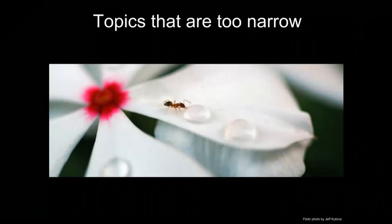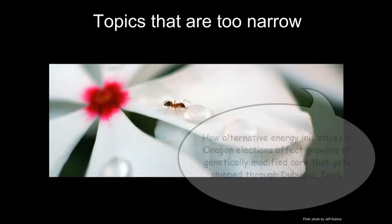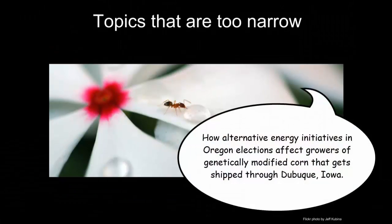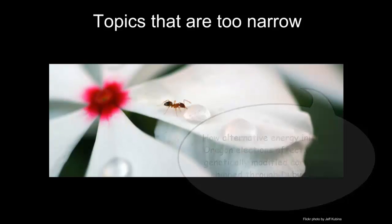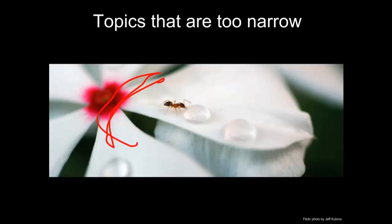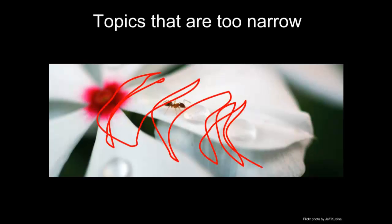Topics that are too narrow are like a tiny drop of water. For example, how alternative energy initiatives in Oregon elections affect growers of genetically modified corn that gets shipped through Dubuque, Iowa. Topics that are too narrow are frustrating to research because nobody has written about them, and hard to write about because there's not enough to say.